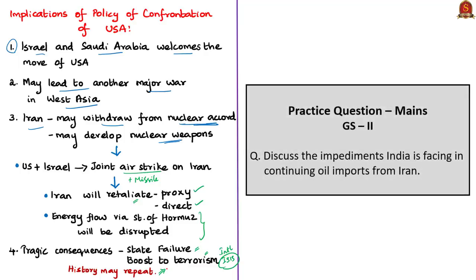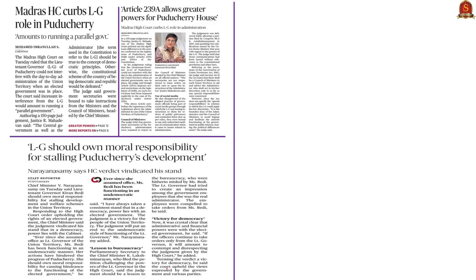With this, we come to the end of the Iran editorial analysis. Have a look at the practice prelims question. The fifth news article of the day is based on multiple articles about the Madras High Court judgment on the powers of the Lieutenant Governor of Puducherry. The first article, 'Madras High Court Curbs Lieutenant Governor's Role in Puducherry,' appears on page 1 in all four editions. The second article, 'Lieutenant Governor Should Own Moral Responsibility for Stalling Puducherry's Development,' appears on page 6 of the Chennai edition. The third article, 'Article 239A Allows Greater Powers for Puducherry House,' appears on page 12 of Chennai, Bengaluru, and Thiruvananthapuram editions, and page 10 of Delhi.